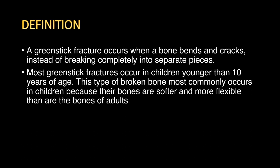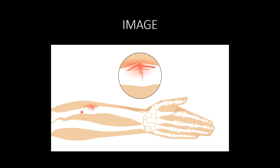Chote bacchon ki bone bahut zyada soft hoti hai, is wajah se unki bone break karne ki jagah bend ho jaati hai aur usmein crack appear ho jaata hai — usko hum green stick fracture kehte hain. Most green stick fractures jo hain, wo children mein dekhe jaate hain at around 10 years of age. This type of broken bone most commonly occurs in children because their bones are softer and more flexible as compared to adult bones. Now let's see the image — this is how the bone looks like. Yahan par ek thoda sa crack pada hua hai aur yeh bone thodi si slightly twist ho gayi hai. So this is how the image of green stick fracture looks like.